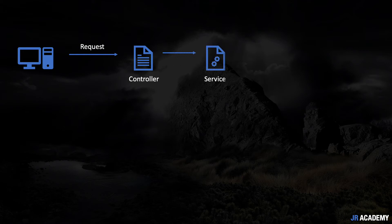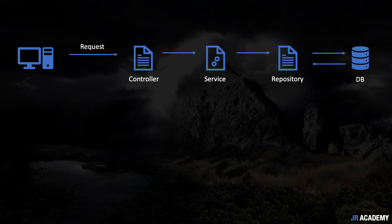When a client calls our API, the request comes to our controller, which redirects it to the service. The service redirects that request to the repository if a database call is needed. The repository gets the data from the server, returns it to the service, which does some necessary processing. That finally processed data comes back to the controller.